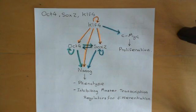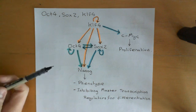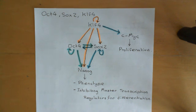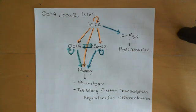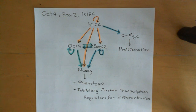CMYC is downstream and activated by KLF4, and is extremely important in keeping the cell proliferating. NANOG is another extremely important transcription factor whose expression is activated by all three master transcription regulators. NANOG controls the expression of many genes that confer the phenotypic features of an embryonic stem cell, and is also crucial in repressing other master transcription regulators associated with differentiated states like skeletal muscle cells.